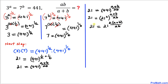Now we can see that 21 on the left can be written as 21^1. Since the base on the left is 21 and the base on the right is 21 as well, and the bases are the same, we can equate the exponents.